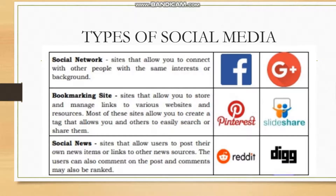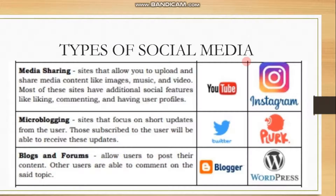Next is social news — these are sites that allow users to post their own news items or links to other news sources. Users can also comment on the posts, and comments may also be ranked. For example, Reddit. Another type of social media is media sharing — these are sites that allow you to upload and share media content like images, music, and video. Most have additional social features like liking, commenting, and user profiles. For example, YouTube and Instagram.